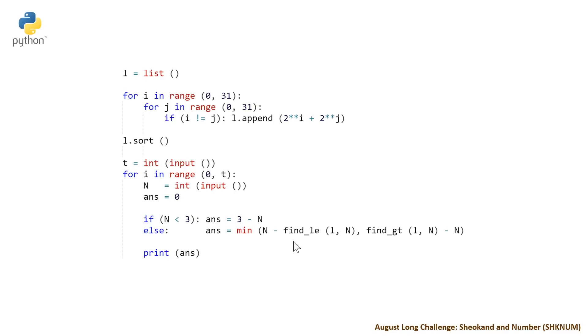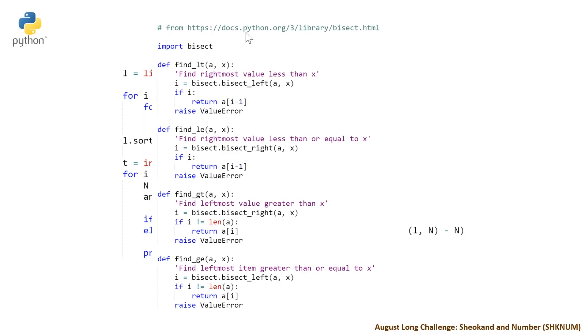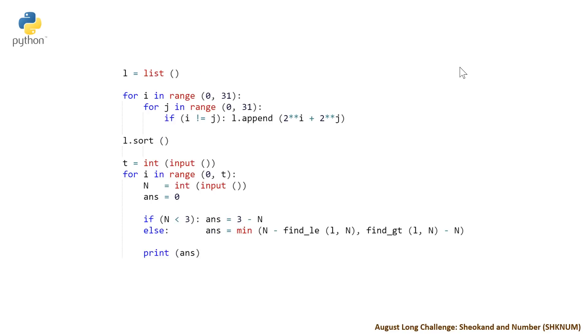Very similar to the Java except here we have find underscore le and find underscore gt, which stands for less than or equal to and greater than. This is similar to the floor, ceiling, higher, lower in Java. These aren't provided with Python, but if you go to the Python documentation in the bisect library, they recommend you add these functions to your personal API so you can make calls to them. Once you have answer, you just print it out. Those are the three solutions.